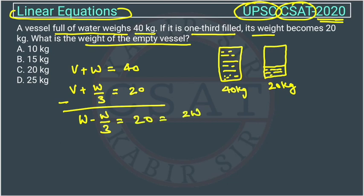It will become 2W/3. So, this will be how much? It will become 20 into 3 upon 2 is equal to W.